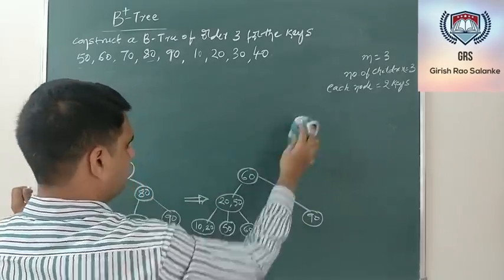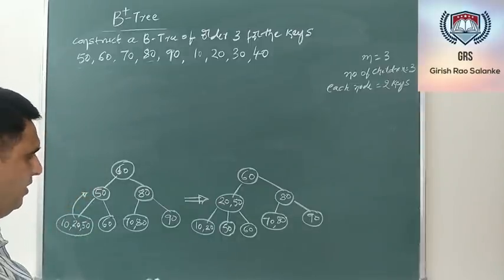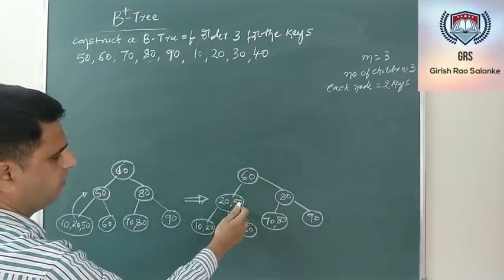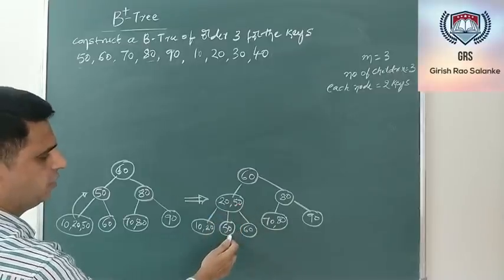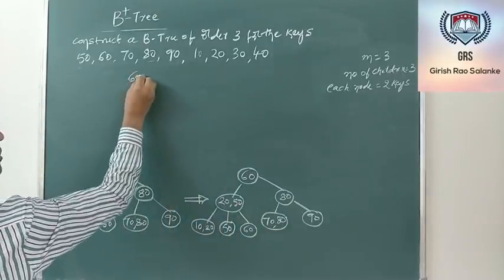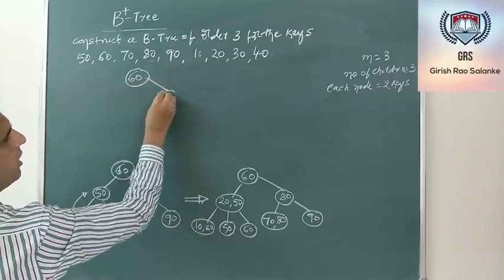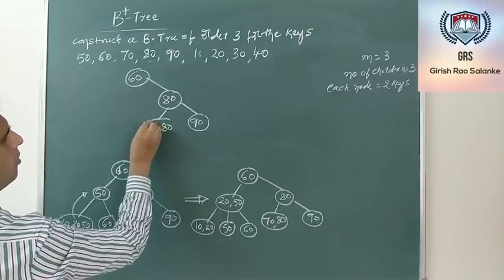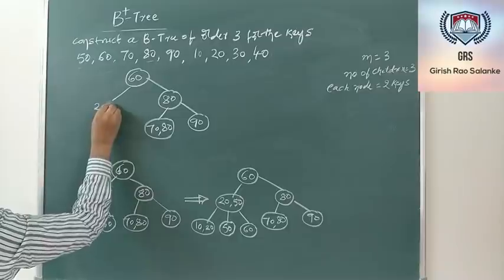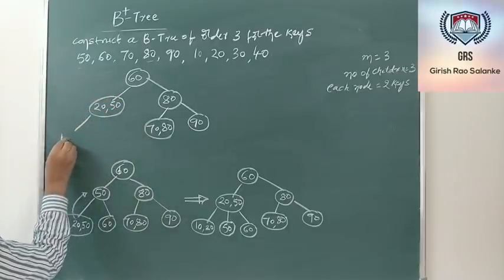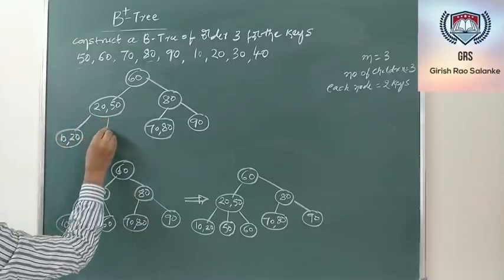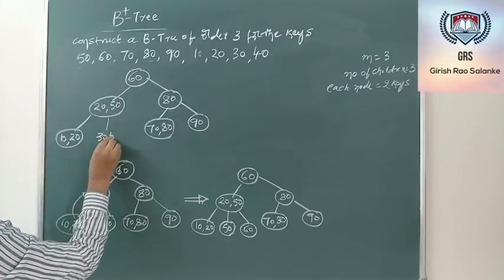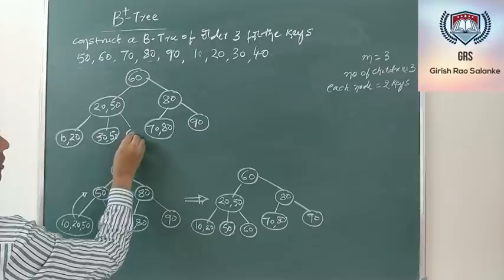Insert 30: compare with 60, less; compare with 20 and 50, 30 is greater than 20 and less than 50, so it goes into the node containing 50. That leaf becomes [30, 50], which is valid. All keys remain at the last level.